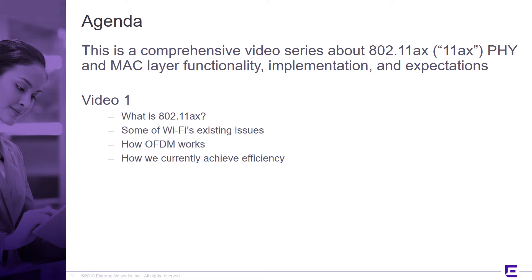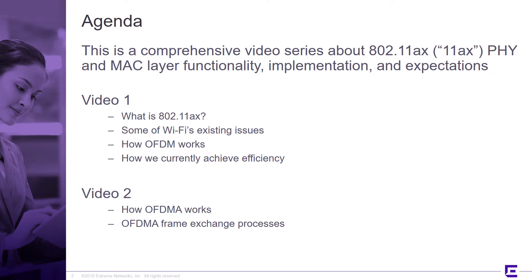Moving on to video two, we're going to discover how OFDMA — orthogonal frequency division multiple access — works. That's the core technology of 11ax. We'll understand how it works and why it's beneficial: how it gives us better efficiency, better system-wide throughput, and better per-client throughput. OFDMA frame exchange processes can be quite complex, so we'll provide samples for uplink and downlink, and cover concepts like buffer sounding.